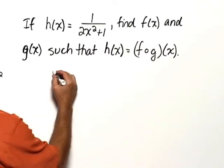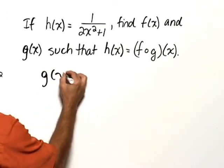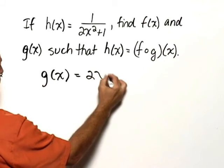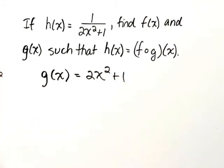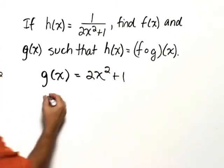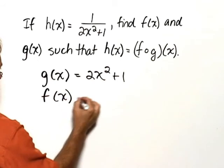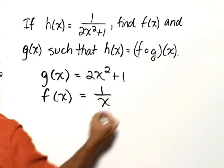And so that means that g of x would be 2x squared plus 1. Then f of x would be 1 over x.